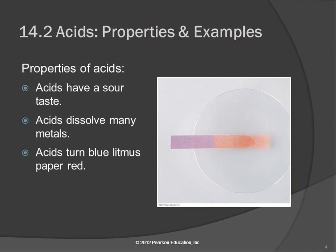We should understand the properties of acids. Acids have a sour taste, they dissolve many metals, and they will turn blue litmus paper red. Litmus paper has a compound in it that changes color depending on the level of hydrogen ion in the solution. If you take a piece of blue litmus paper and put it into an acid, it turns red — in this picture it looks more like lavender and pink, but same idea.